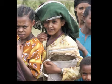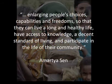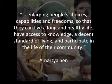My talk today is about this young woman, and many more young women around the world like her. We met her in Gojam, a part of Ethiopia famous for its farming. The day I took this picture, we asked her what she wants to be when she grows up. She said she wants to be a doctor. In his book, Development as Freedom, the Nobel Prize-winning economist Amartya Sen defines development as enlarging people's choices, capabilities and freedoms so that they can live a long and healthy life, have access to knowledge, a decent standard of living, and participate in the life of their community.